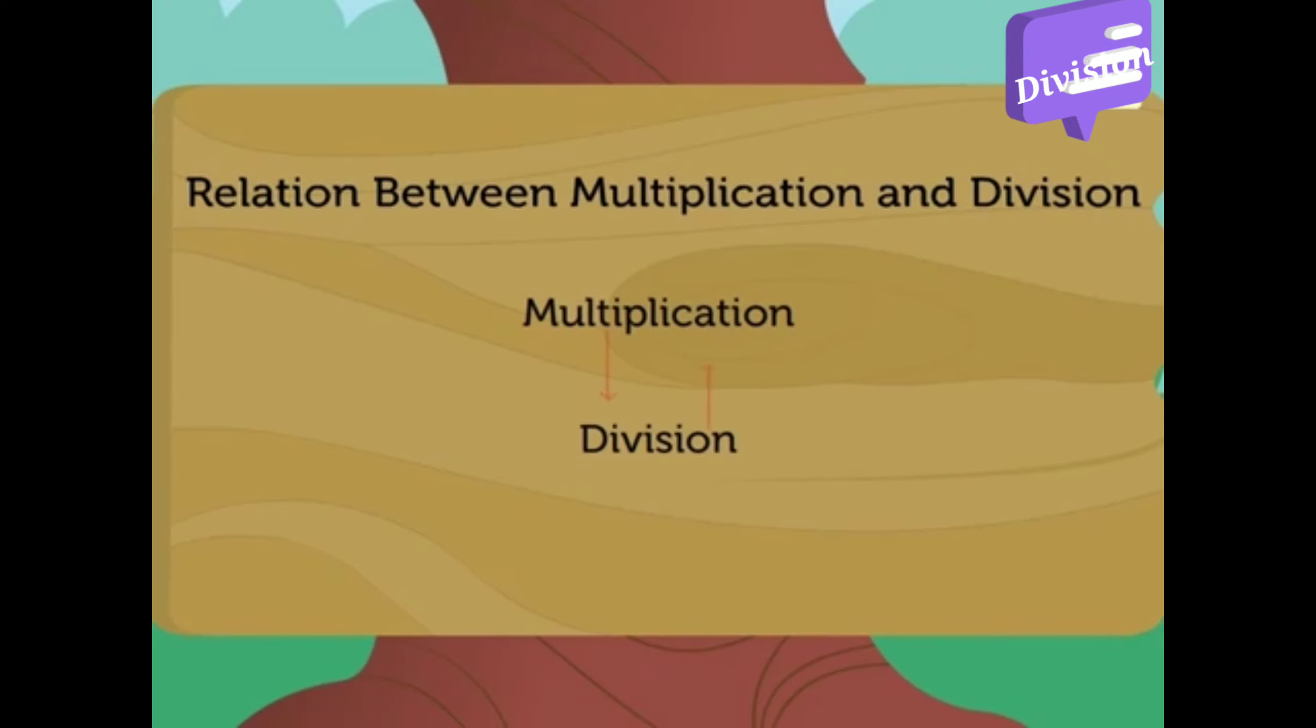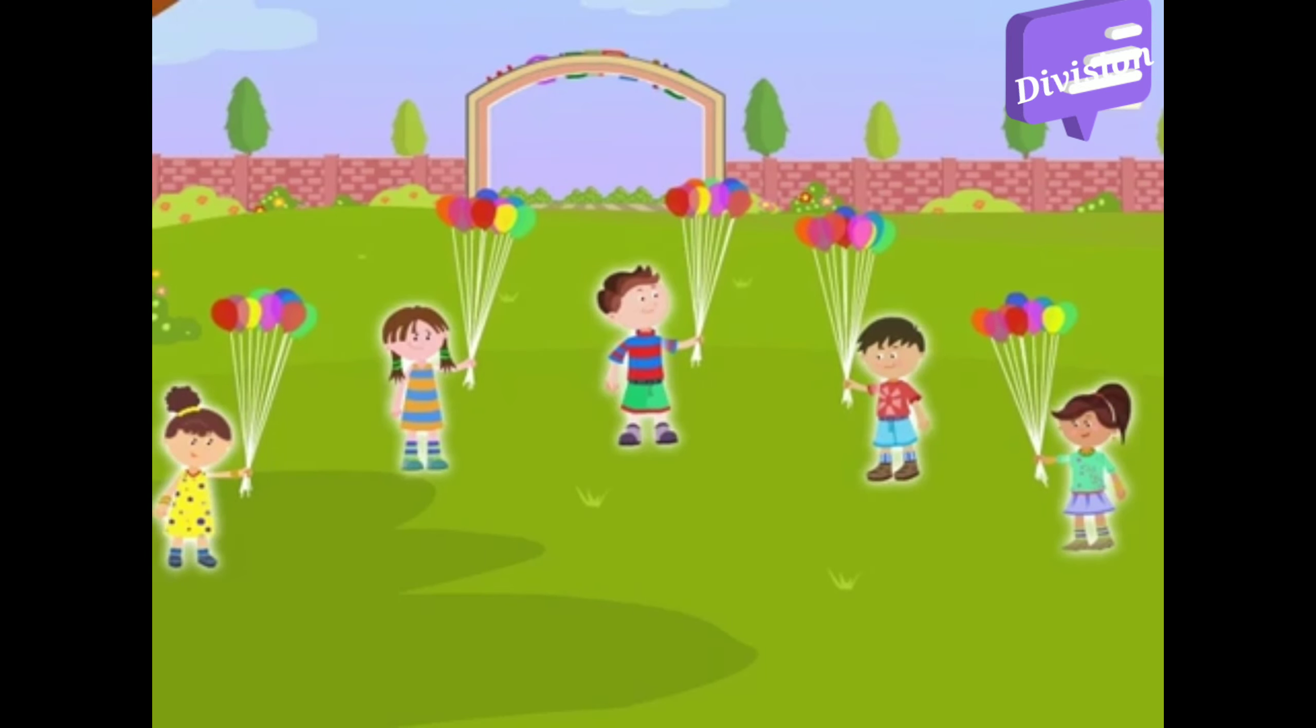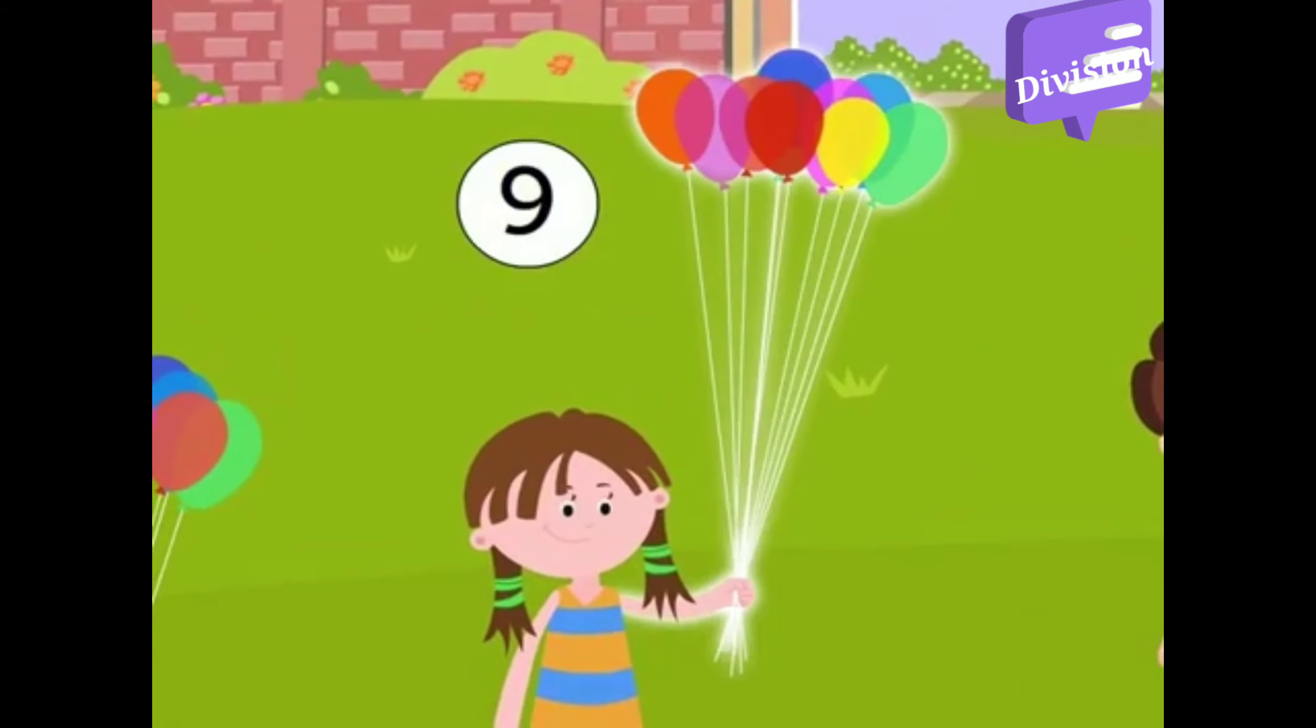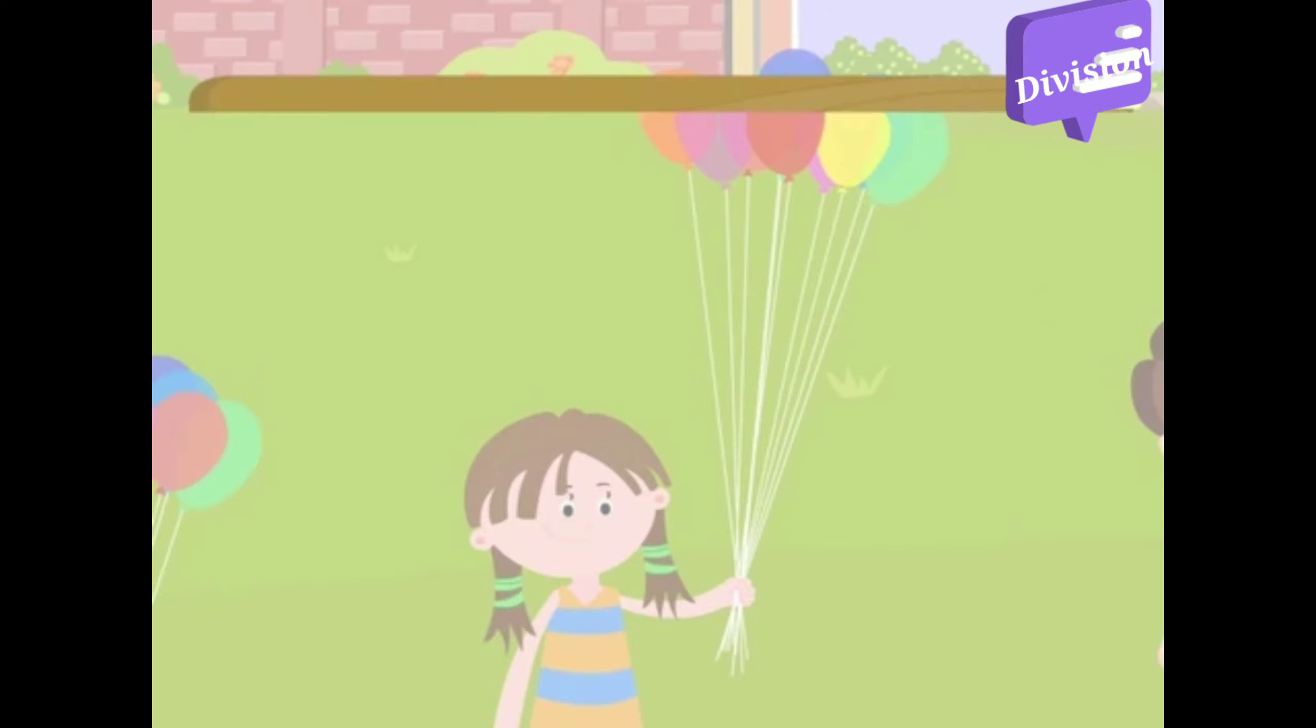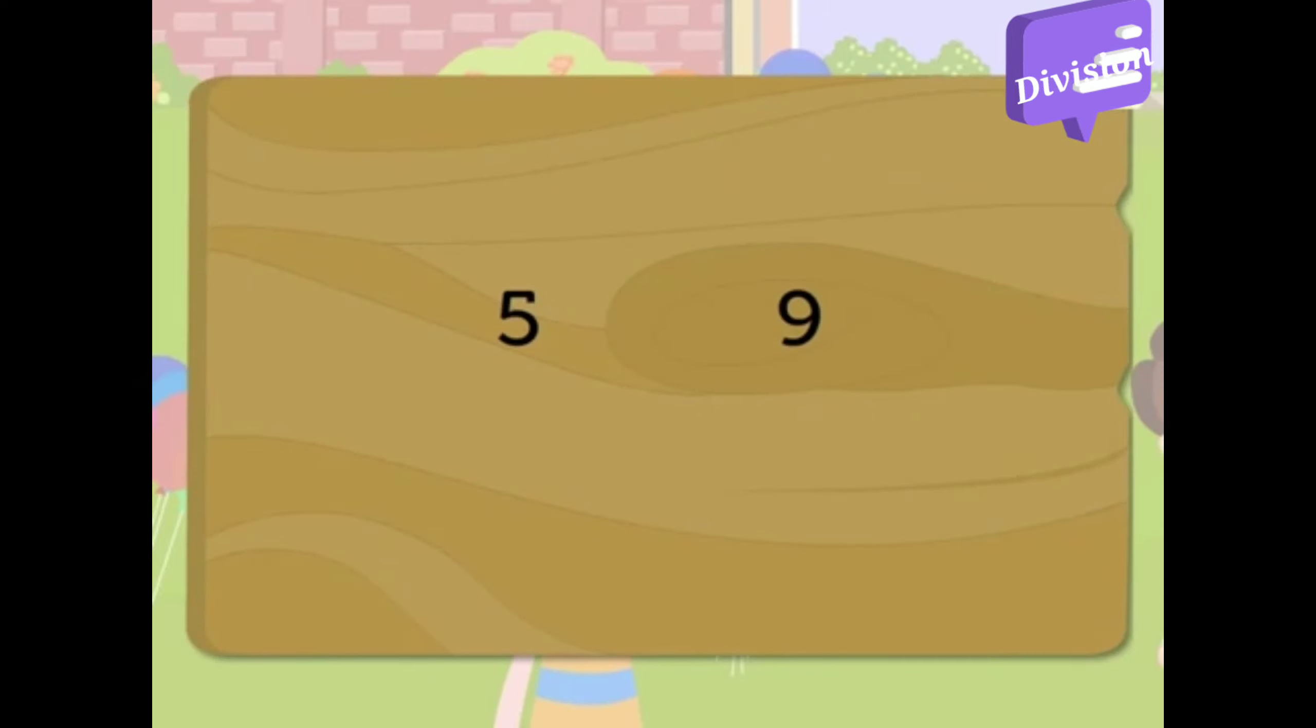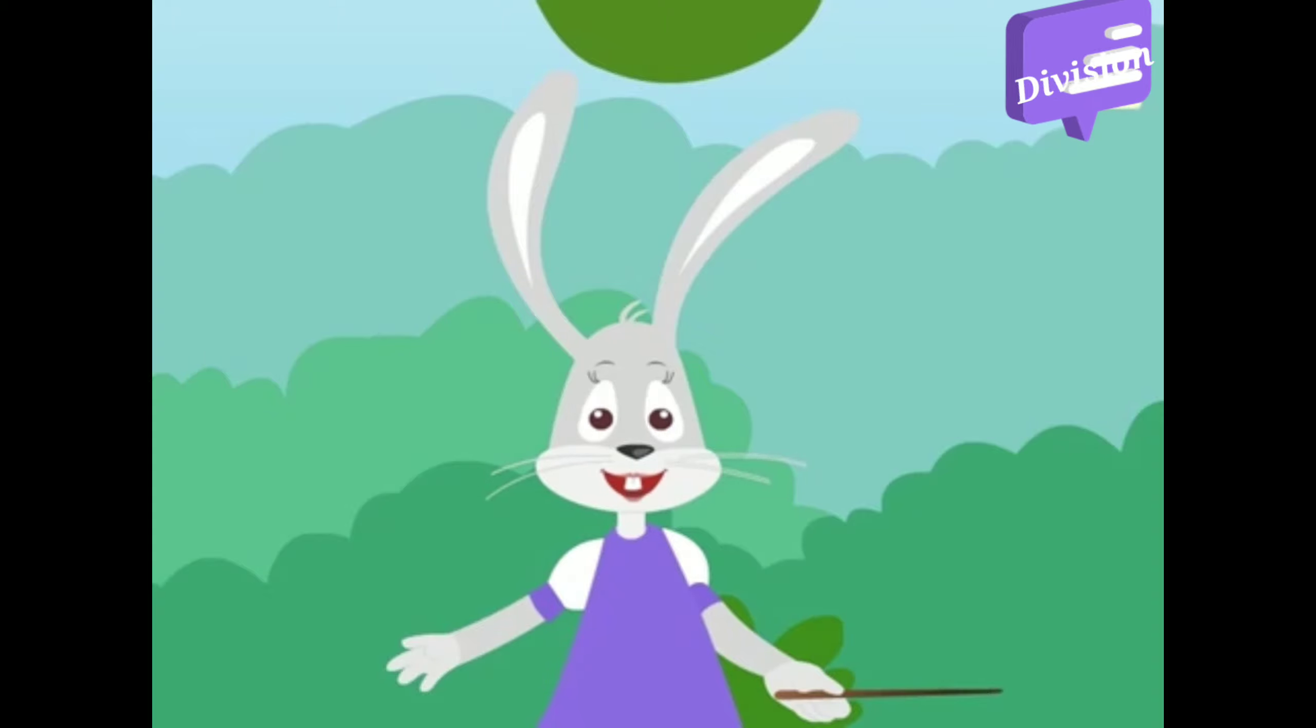Multiplication and division are very closely related. Let us see how. Look, there are five kids. Each kid has nine balloons. How many balloons are there in all with the five kids? So here we multiply the numbers 5 and 9 to get the answer. So 5 times 9 equals 45.